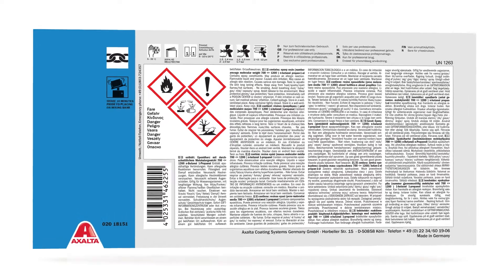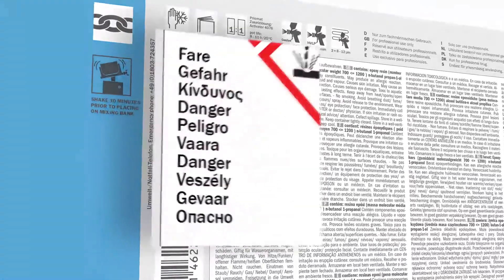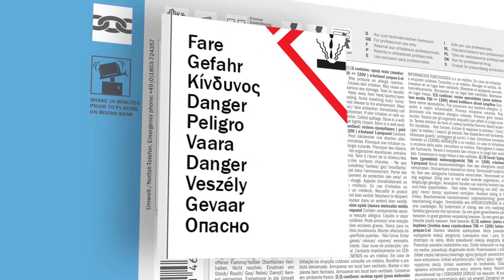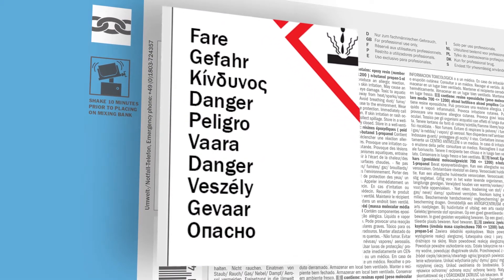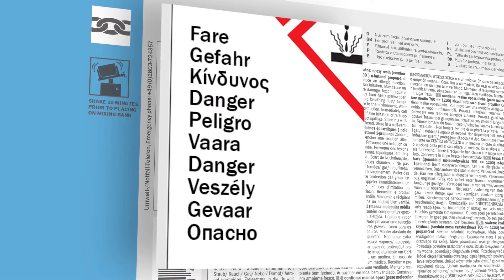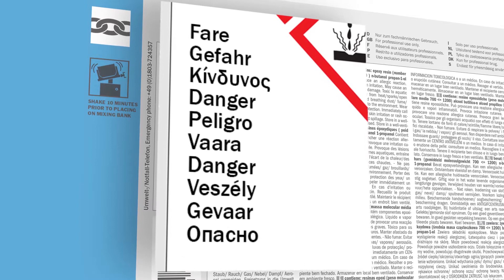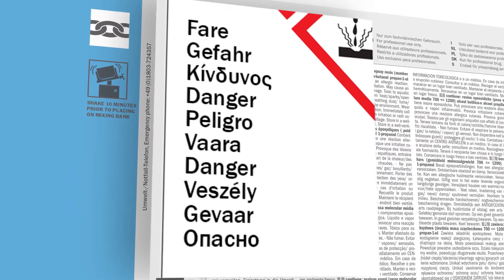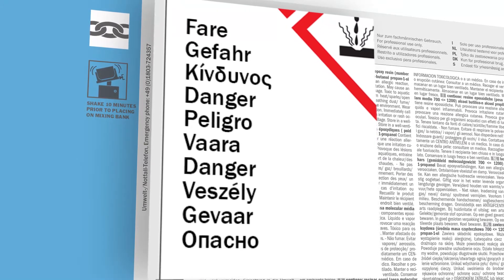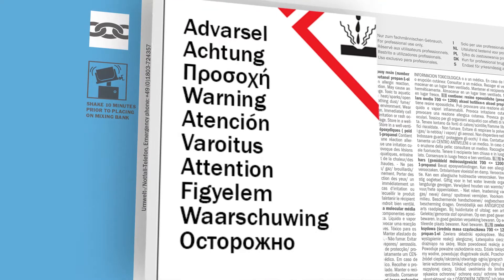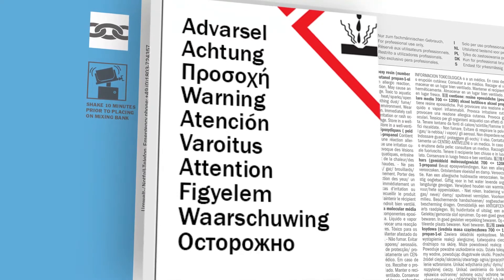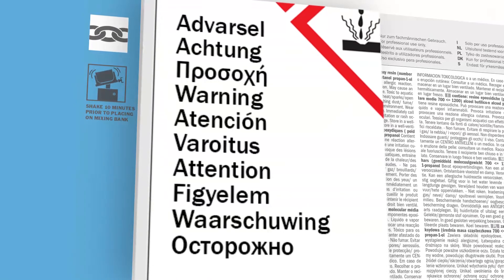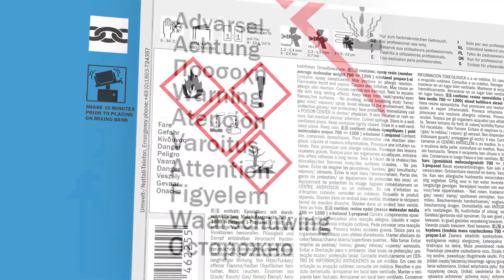Let's start with the signal word. The use of a signal word on the label indicates the severity of the potential hazard. There are two levels of severity: danger for major hazards and warning for less extreme situations. Only one signal word will be used on each label.